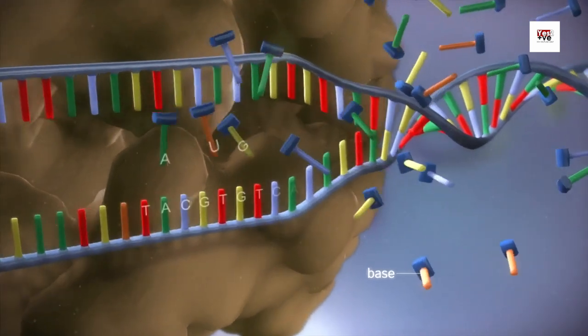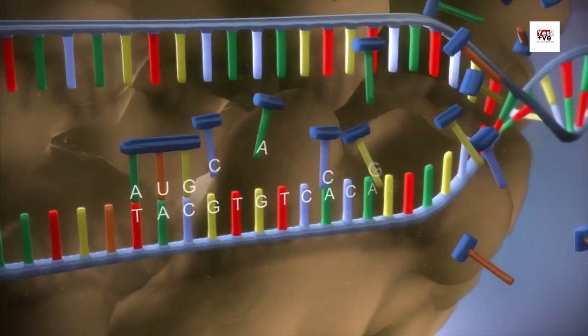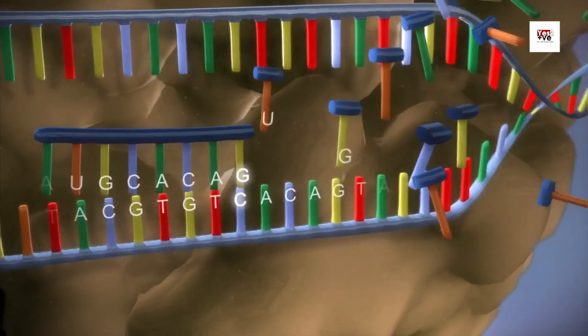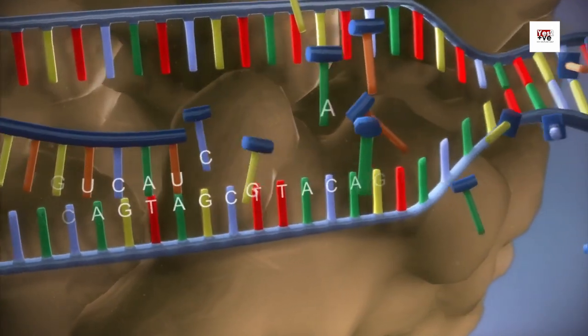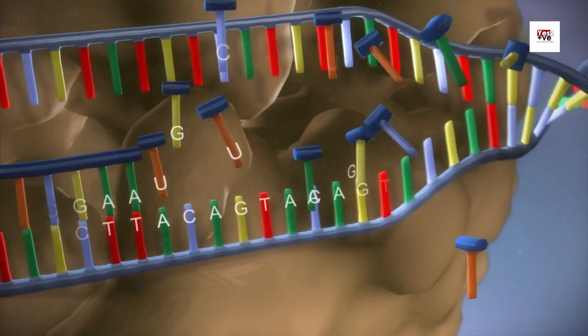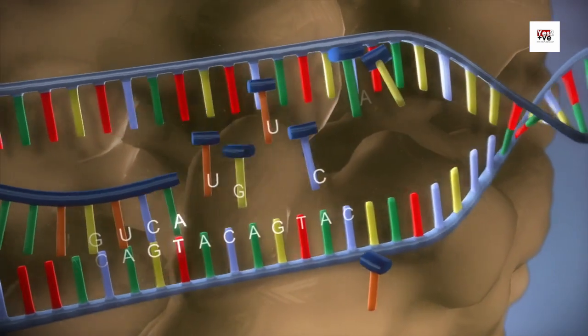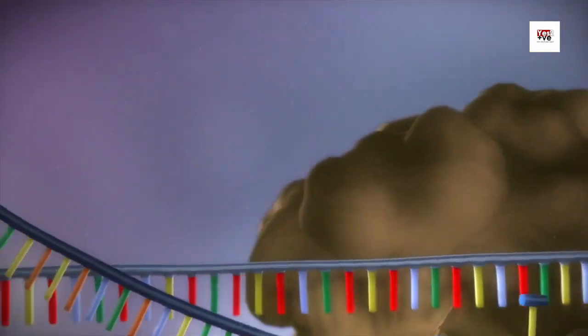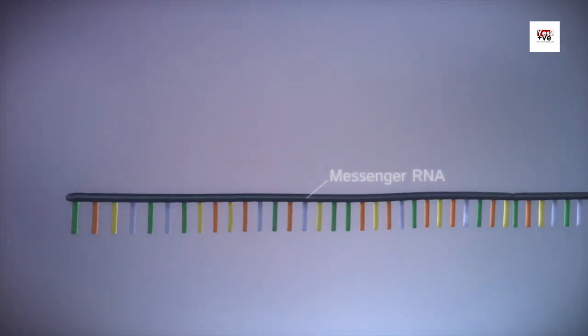The decline in CD4 cell count is a significant indicator of HIV progression. In a healthy individual, the CD4 cell count typically ranges from 500 to 1,500 cells per cubic millimeter of blood. However, in individuals living with HIV, the virus causes a decline in CD4 cell count over time.